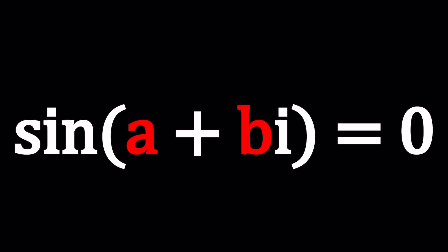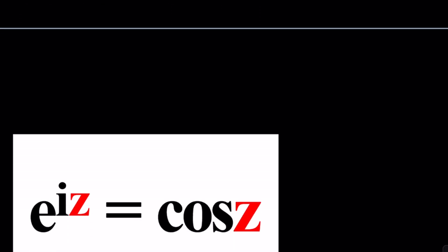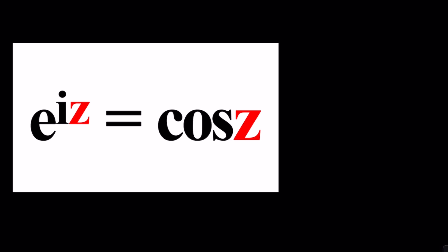We have sine of a plus bi equals zero, and we're going to be solving for a and b values. Can we solve for two variables in this case? Let's go ahead and find out. Now this problem was actually inspired by comments to a video that I made recently, I think it was about a week ago.